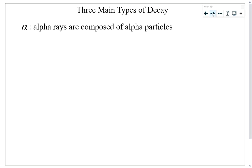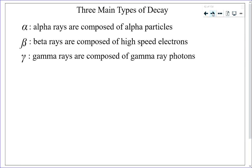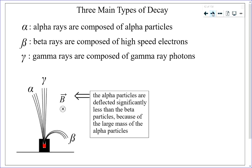Alpha decay consists of rays of alpha particles. Beta decay consists of rays of high-speed electrons. Gamma decay consists of rays composed of gamma ray photons — the same gamma ray photons on the electromagnetic spectrum. When a magnetic field is directed into the page, gamma rays are not deflected because they have no charge. Alpha rays are deflected in the direction positive particles would go. Beta rays are deflected in the direction negative particles would go, and are deflected significantly more because electrons have very low mass compared to alpha particles.